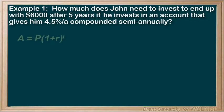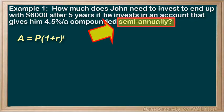Let's start by writing down our compound interest formula: A equals P times (1 plus r) to the power of t. Our compounding period is semi-annual, which means twice a year, so the compounding period is 6 months.